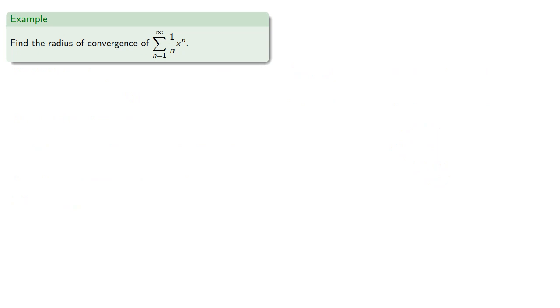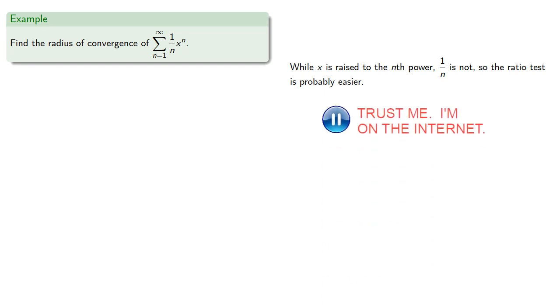Or let's take another example. Let's find the radius of convergence of 1 over n, x to the n. So while x is raised to the nth power, 1 over n is not, so the ratio test is probably easier. Again, since we want the series to converge, we require the limit of the ratio to be strictly less than 1, which gives us...